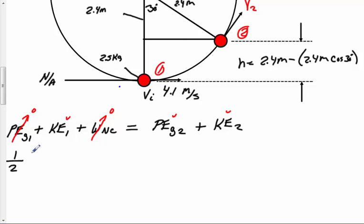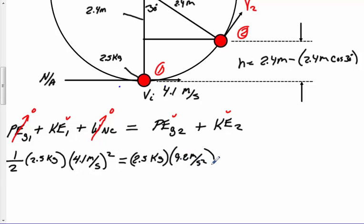I'm ready to write my equation. I'm going to have one-half times my mass, which is 2.5 kilograms, times my velocity, 4.1 meters per second squared. That's going to equal my gravitational potential, which is going to be mgh. That would be 2.5 kilograms times gravity, which is 9.8 meters per second squared, times 2.4 meters minus 2.4 meters cosine 30 degrees, plus one-half times 2.5 kilograms times v2 squared. And again, this is what we're looking for in this problem. We want to find out what this value is right here.